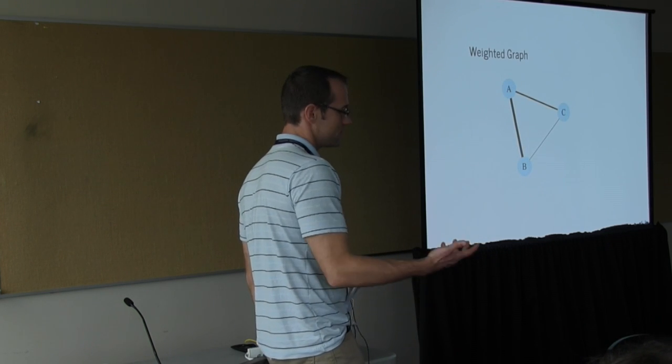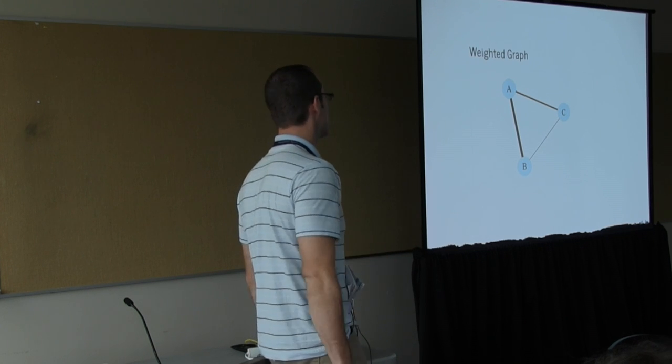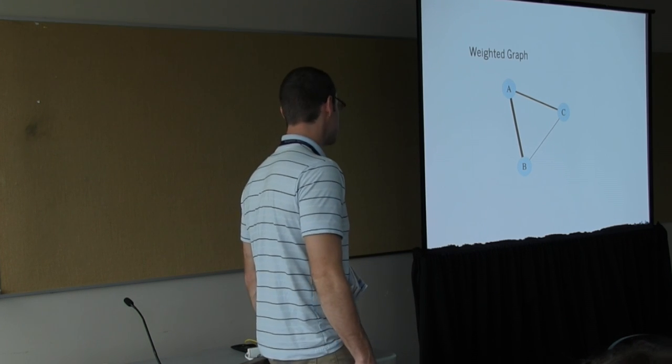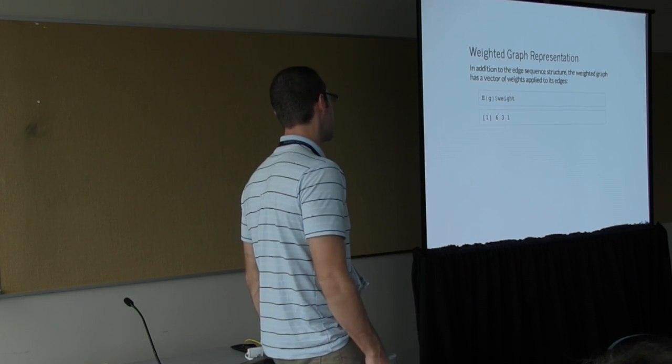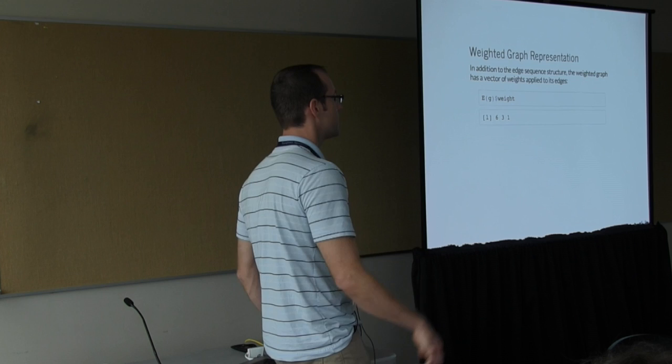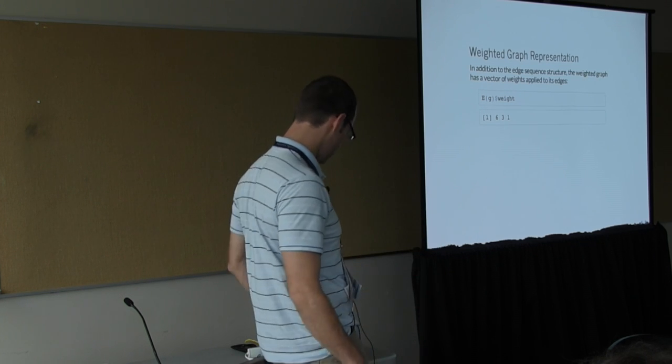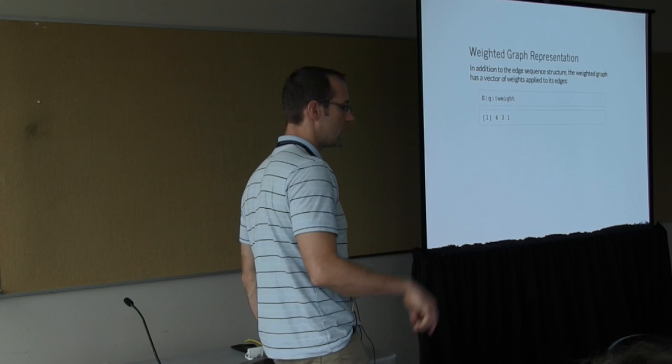And weighted graphs. This is, of course, significant too, because strength of relationship quite often can be significant. In this, you simply have a vector of weights that key to your edges. A bit of metadata, if you will, on each edge.